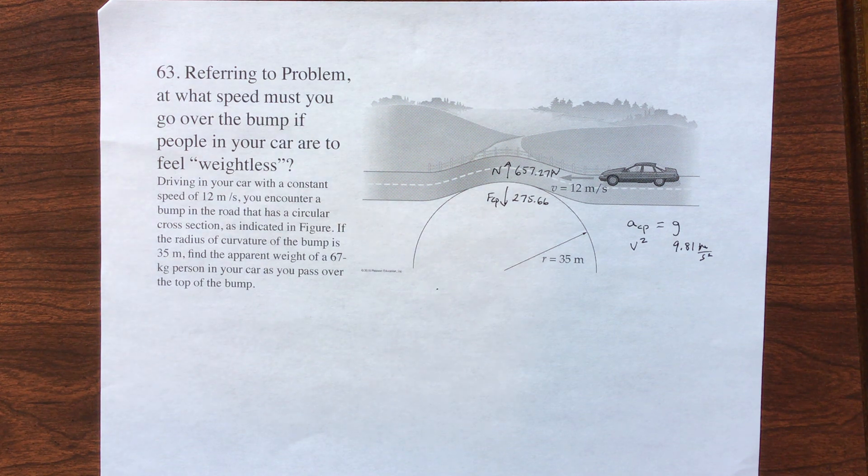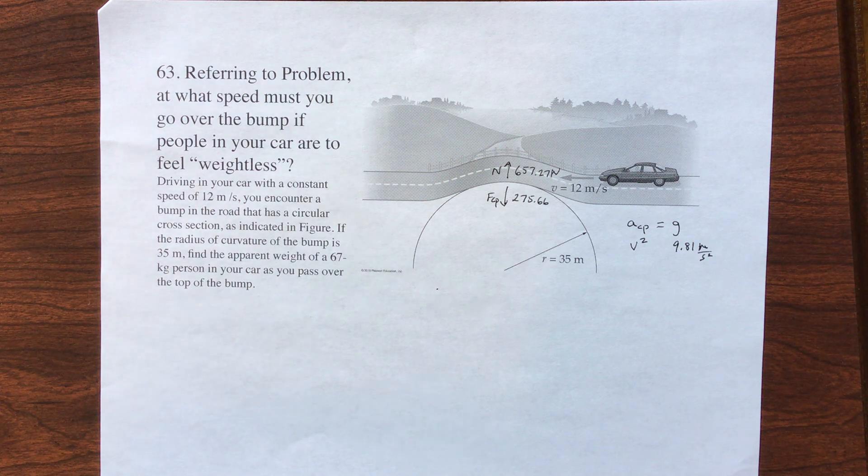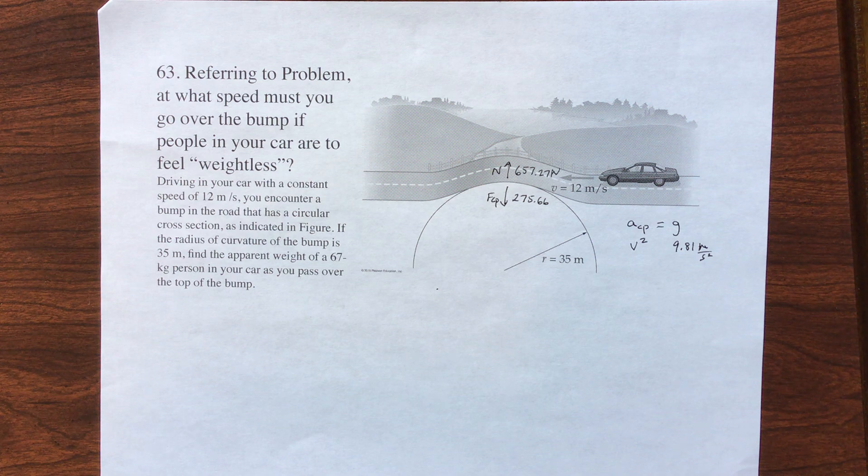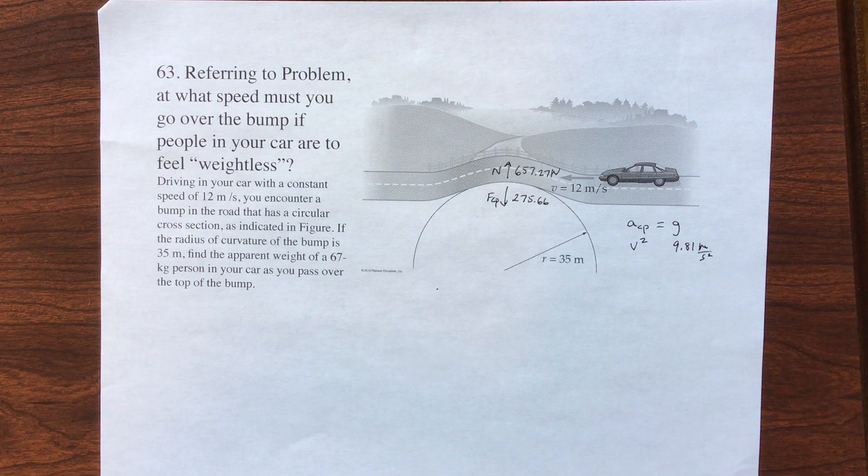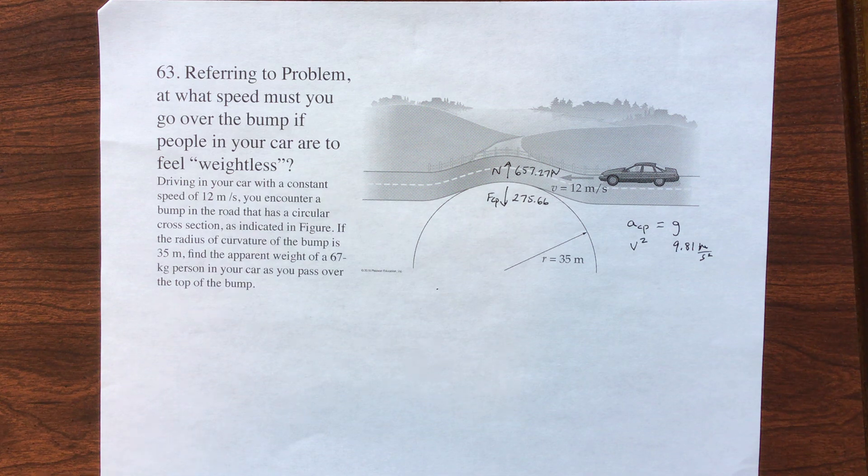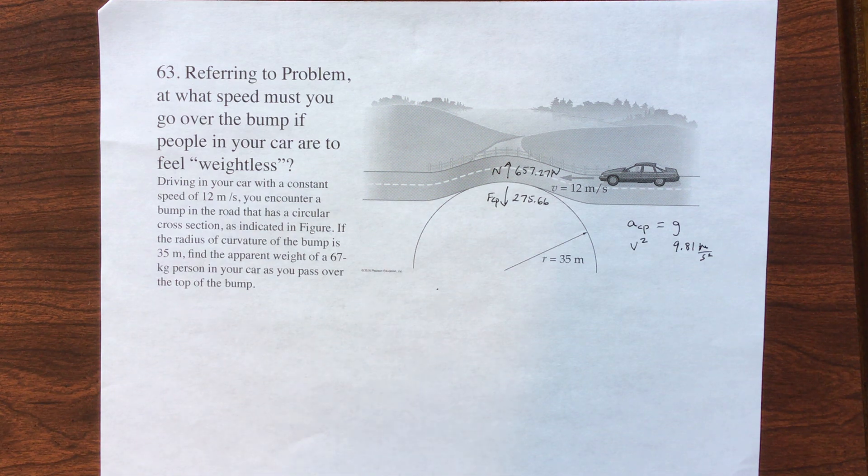So your normal mg weight that the car seat is pushing back up on you with, that normal force, is reduced when you go over the top of a circle. It's increased if you go down into a dip. You would actually feel heavier. In fact, your suspension of your car will even give as you go down into a dip.